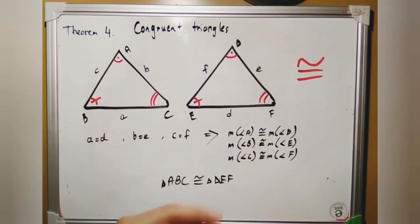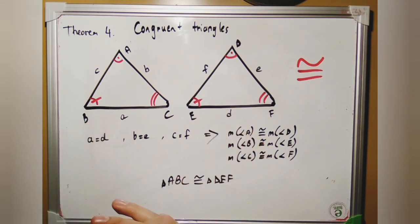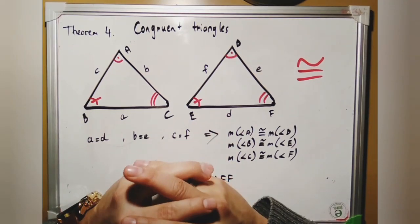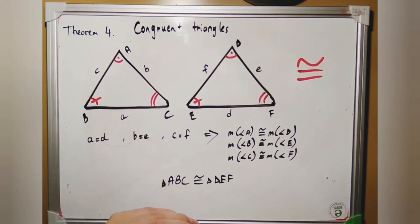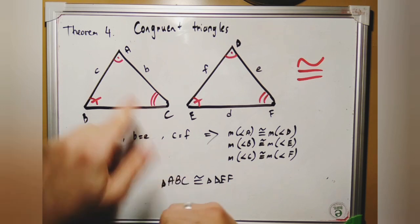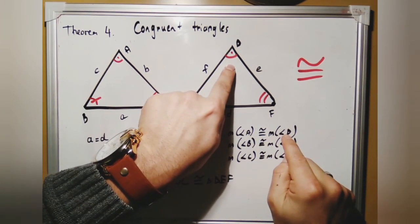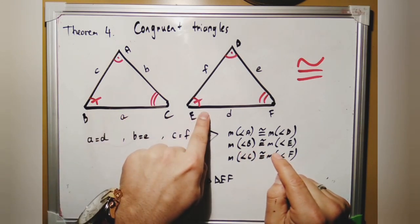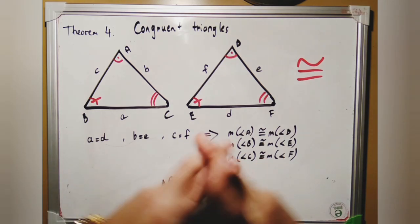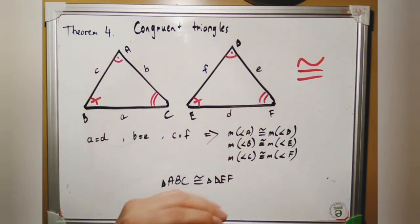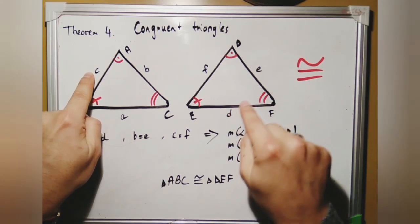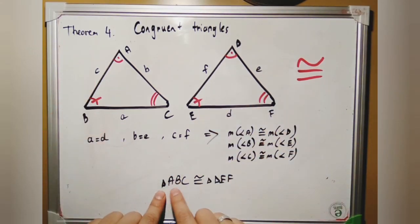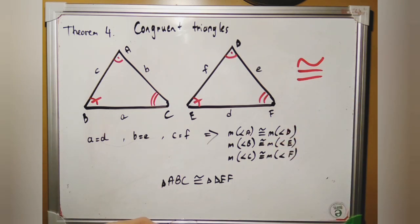Theorem 4 is about congruent triangles. If the corresponding angles and corresponding sides of two triangles are congruent, then the triangles are called congruent triangles. Triangle ABC and DEF are congruent because angle A ≅ angle D, angle B ≅ angle E, angle C ≅ angle F, and side a = side d, side b = side e, side c = side f. So we write triangle ABC ≅ triangle DEF using the congruence symbol.